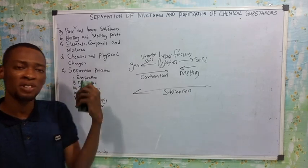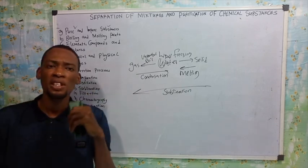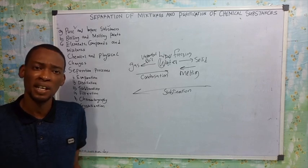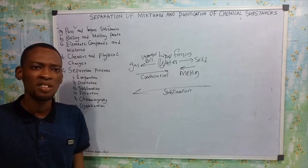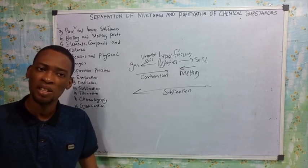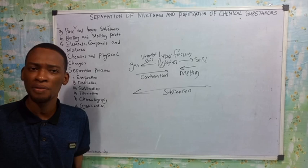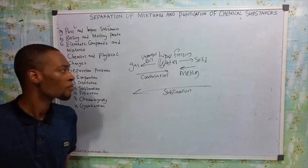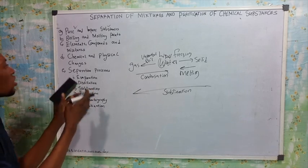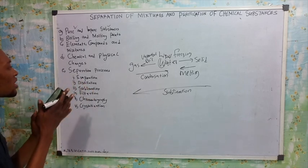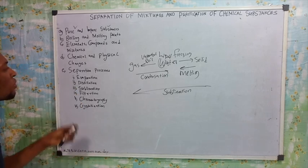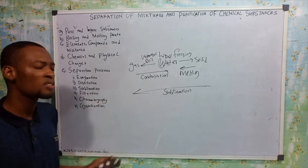Chemical changes, on the other hand, are changes in which new substances are formed. For example, burning a sheet of paper produces something else that cannot be reversed. Most chemical changes involve heating. So: chemical changes — new substances formed; physical changes — no new substances formed.